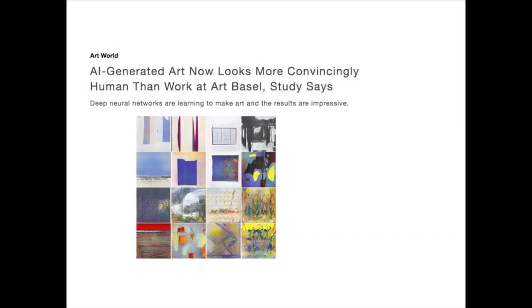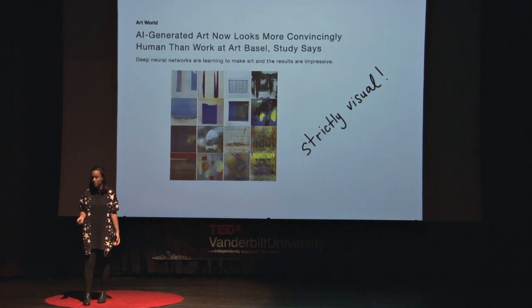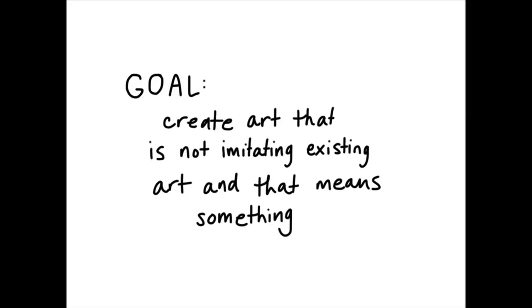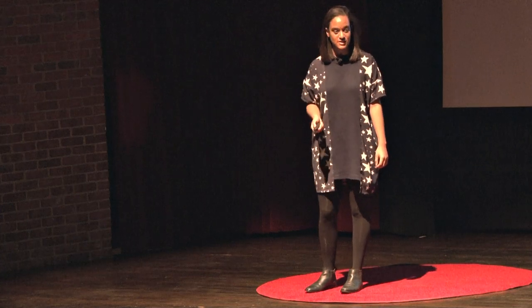Number two is this: the fact that producing art that looks indistinguishable from real human art is a strictly visual evaluation of success. It's all still really impressive and maybe the intended goals were met, but I set out to design a system with this goal: to create art that's not solely imitating existing art and that means something. So I present to you Arthur — 952 lines of code that I wrote, and then tried really hard to make look nice on a single slide.